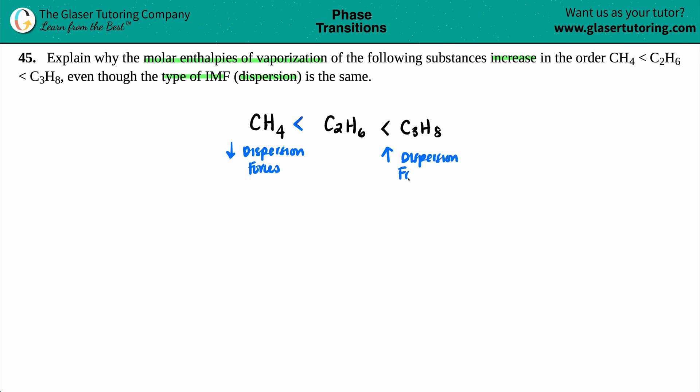Now, the answer lies here, if we just quickly draw the Lewis structures. So CH4 has one carbon in the middle, surrounded by four single bonds, and they're all bound with an H. So these have the least dispersion forces. Then comes C2H6. There are two carbons in the middle, surrounded by three hydrogens on both sides, making the C2H6.